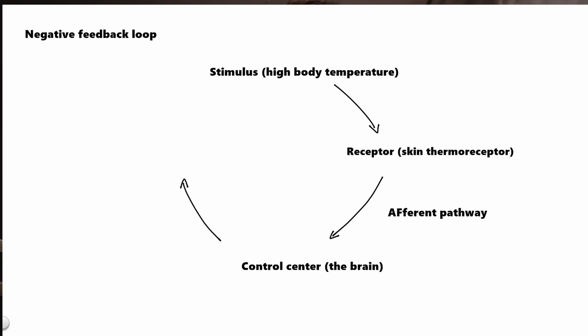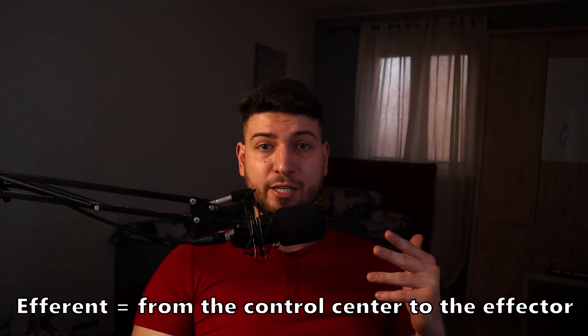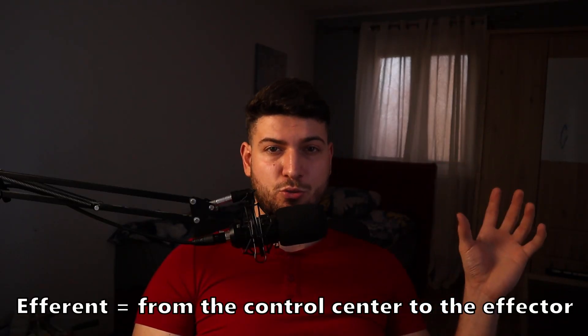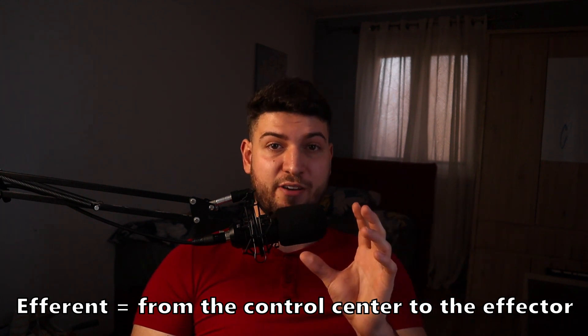The control center sends information about what to do to the effector, and this takes place through a neuronal pathway called the efferent pathway. Why efferent? Because it goes to the effector. Remember: efferent goes from the control center to the effector. The effector can be a muscle, a gland, or any other structure that does something in your body.